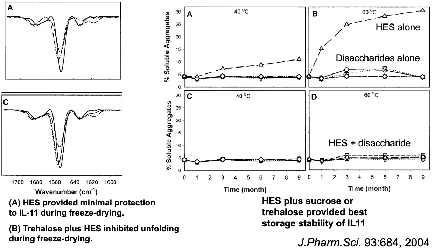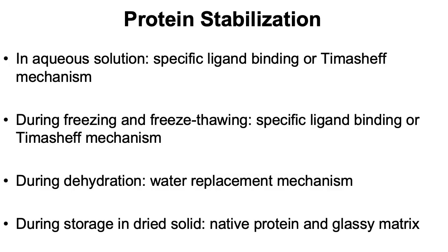Here's another example showing the impact of both glass transition temperature and proper stabilizing additives. This is an interleukin-11 study. In the presence of disaccharides, the native protein structure was greatly retained. In the presence of the polymer hydroxyethyl starch, there was no stabilization of the structure, but the starch gives a very high glass transition temperature. So just starch alone does not inhibit aggregation during storage. Disaccharides alone are fairly effective, but at 60 degrees, not great. If you have both the polymer to increase the glass transition and the disaccharide to stabilize the native structure, you get outstanding stability — almost no aggregation after nine months at 60 degrees storage of the dried formulation.